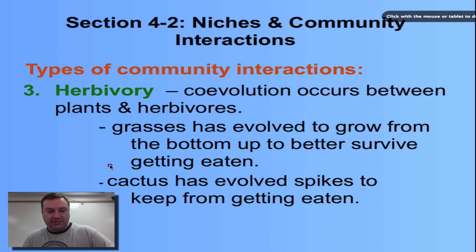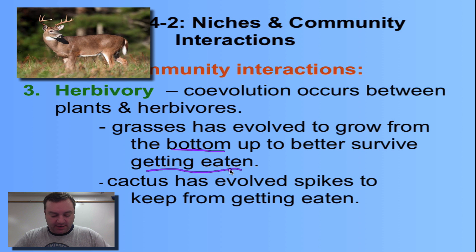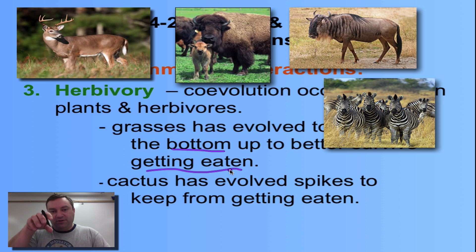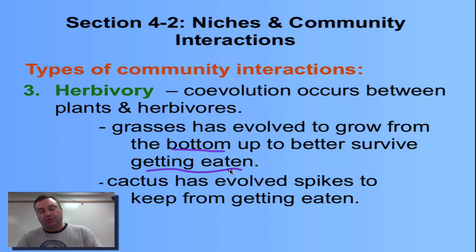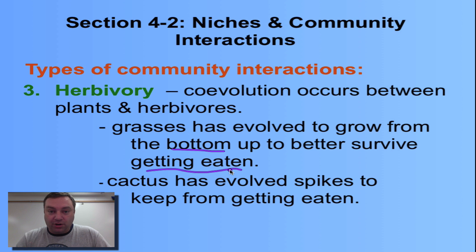Consider grasses — they've evolved to grow from the bottom up to better survive being eaten. Herbivores such as deer, bison, wildebeest, and zebras nibble on grass blades. Most plants grow at the tips, so if you bite off the growth area, the plant can't repair itself. But grasses have evolved so their growth area is at the base of the leaf, where herbivores don't eat, allowing them to regrow. We're familiar with this because we have to mow our lawns regularly during the growing season as they keep growing back after we chop off the tops.